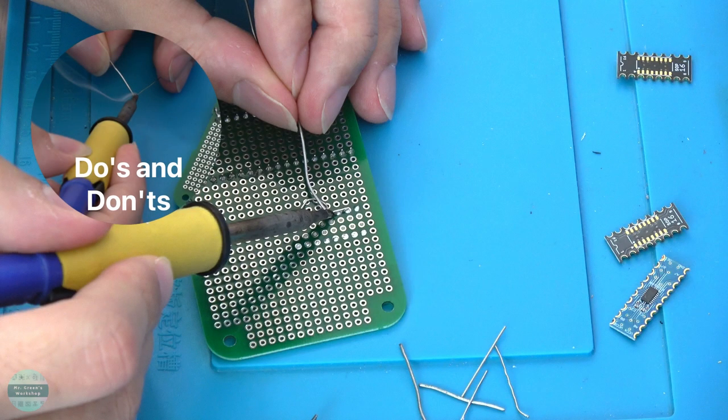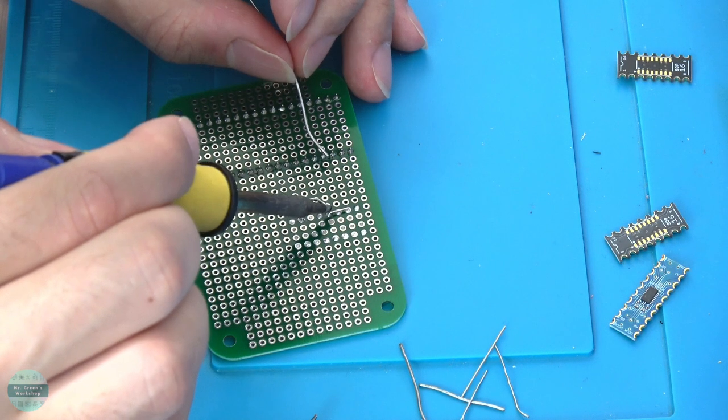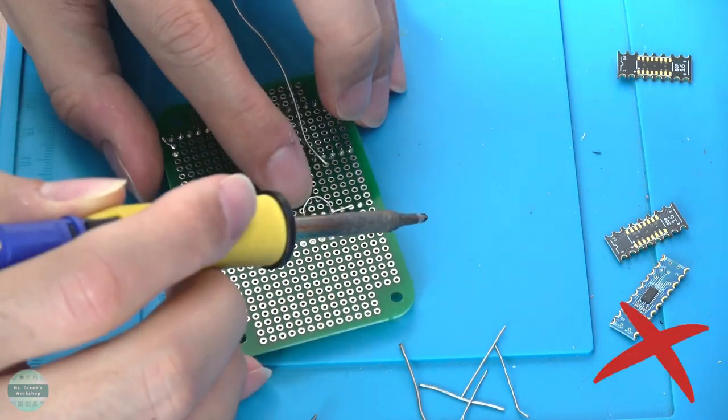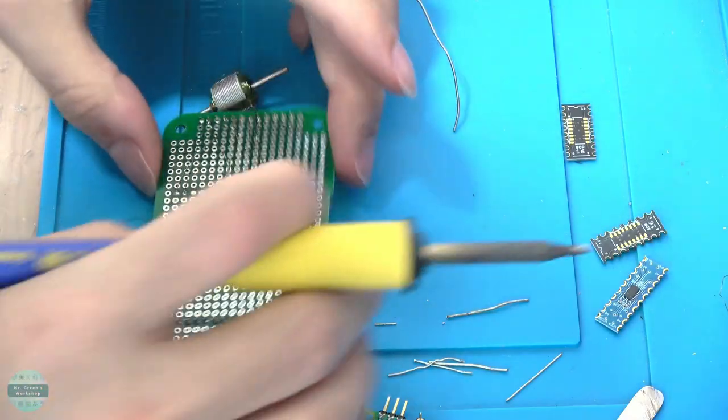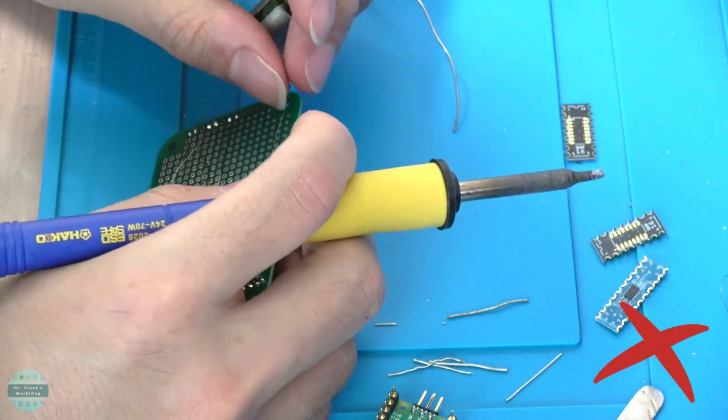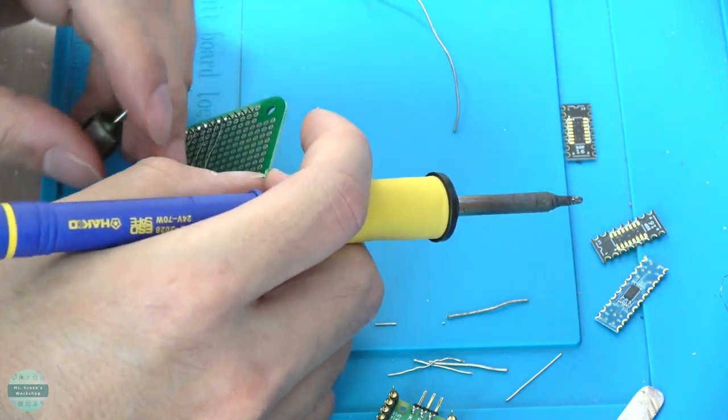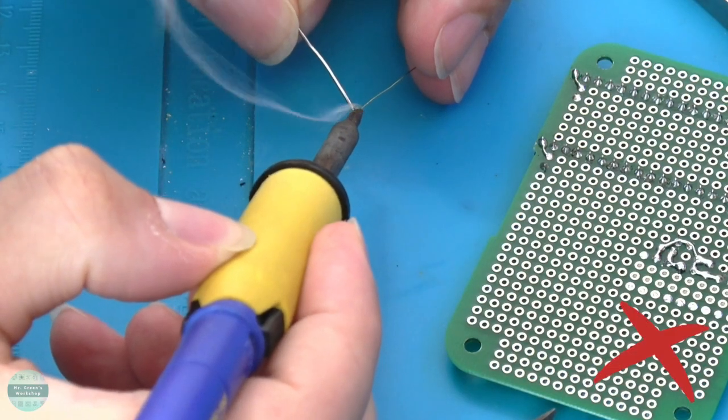Do as I say, not as I do. Do not use your fingertips to hold down the wires while soldering. Doing so may cause serious burns. Please use tweezers. Do not try to do anything else with a soldering iron in one hand, or you may burn something around you or even yourself. Breathing the fumes from burning magnet wire enamel can be very unhealthy. You need a good fume exhaustion system, not just a fan.